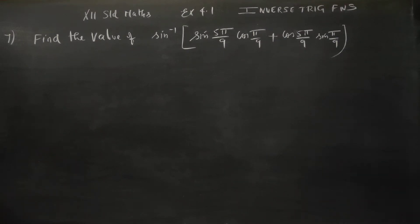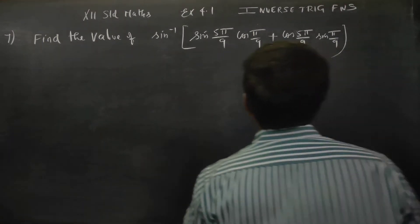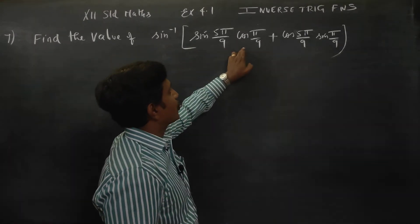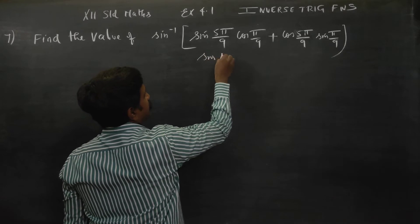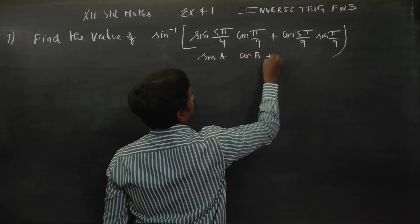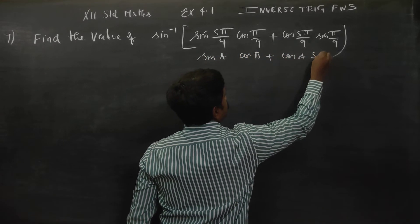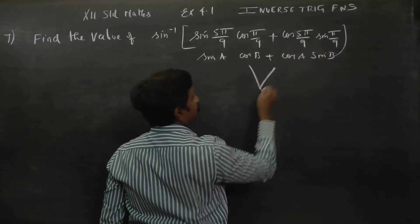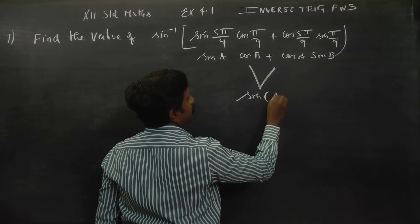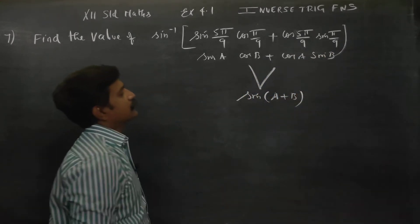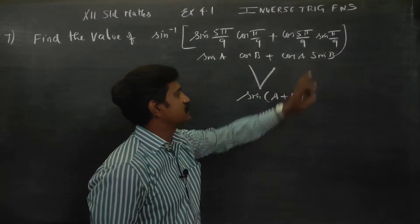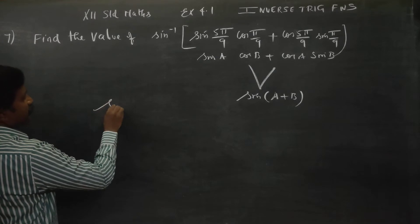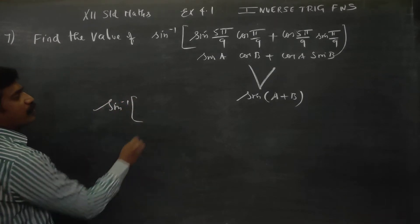Hello 12th standard students. Find the value of sin inverse of sin a cos b plus cos a sin b. Now, sin a cos b plus cos a sin b can be written as sin(a + b) — this is the compound angle formula. So I am going to simplify this as sin inverse of sin(a + b).